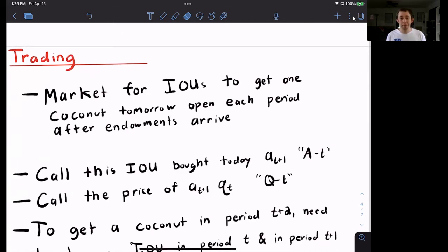...we are going to have one market every day. So every day you come out and you trade your promises to pay a coconut tomorrow. So we're going to call this IOU bought today, we're going to call this A_t+1.